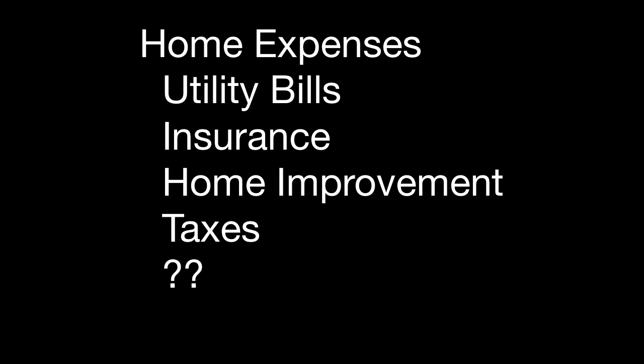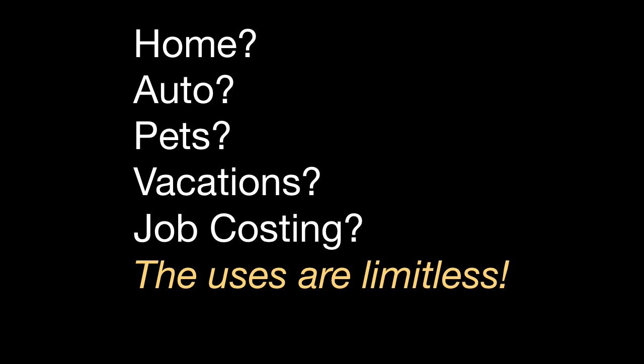You might remember them called Classes in other versions of Quicken. An example here is probably pretty fitting. Let's take my home — I've got all my various utility bills, insurance costs, home repair costs, improvements. How do I encapsulate everything so I can see how much this house has cost me in the past 10 years? Or another example: how much has my car really cost me? Well, that's where tags come into play.